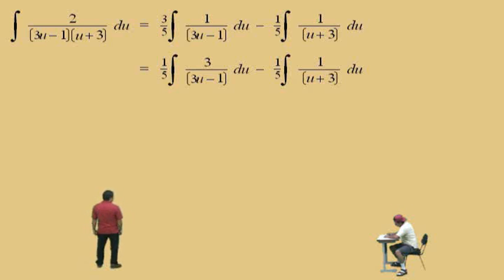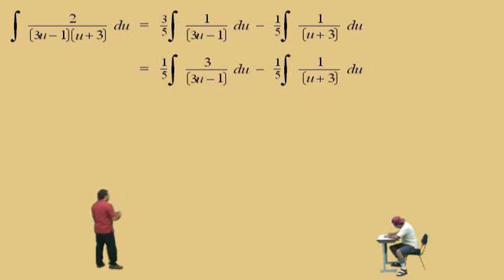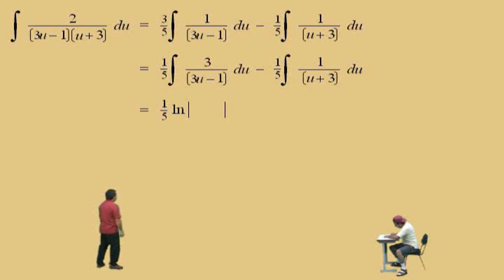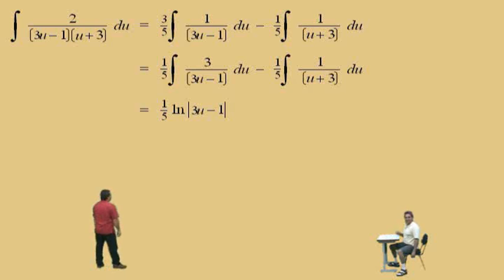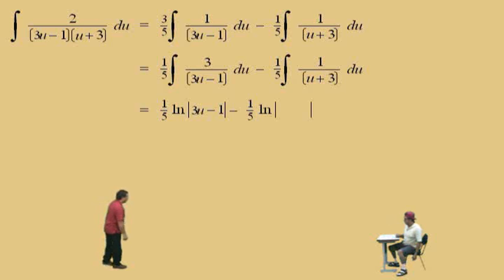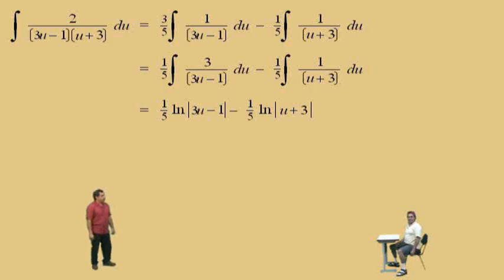So here we go, we're almost home. We have one-fifth. The integral of 3 over 3u minus 1 du is the natural log of |3u minus 1|. Very nice, Charlie. And the integral of 1 over u plus 3 is natural log of |u plus 3|, and that's a one-fifth. Don't forget, we have to put plus C.